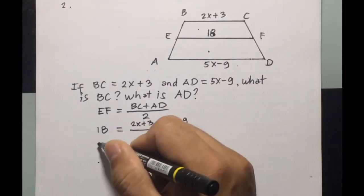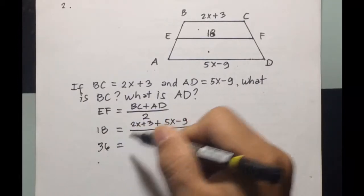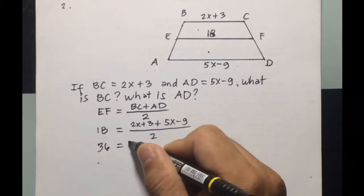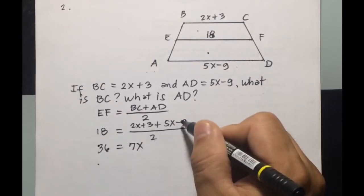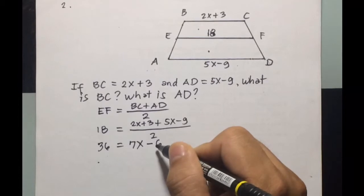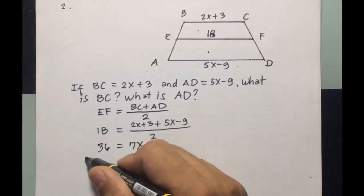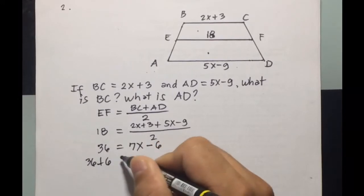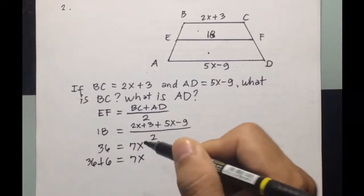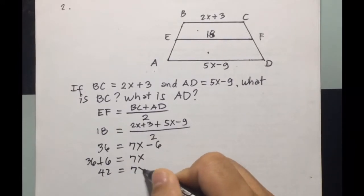So cross multiplication, it will be 2 times 18, it will be 36, equals 2X plus 5X is 7X, 3 minus 9 will be negative 6. Then transpose negative 6 to the left side, so we're going to have 36 plus 6 equals 7X, then 36 plus 6 is 42 equals 7X.